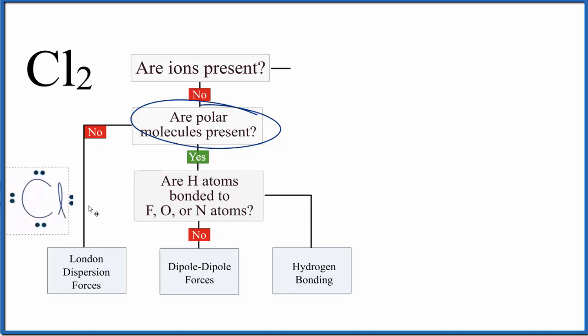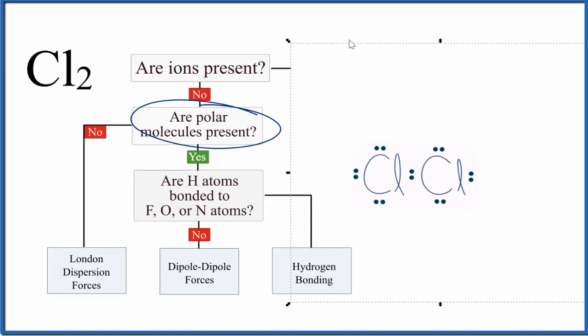We really need a Lewis structure to do that, so let's put a Lewis structure for Cl2 over here. If we look at polarity, we're talking about a difference in electronegativity. Here we have two chlorine atoms, so there's no difference. We don't have polar molecules present, so this part here we're not going to follow.